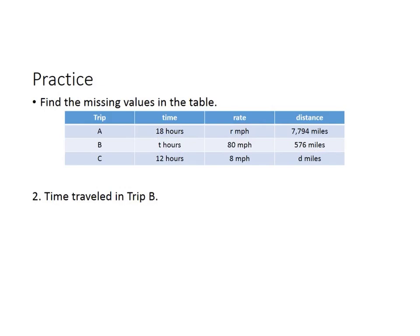In this one, you're going to find the time for trip B. You know that they went 80 miles per hour and they went 576 miles. How long did it take them to get there?